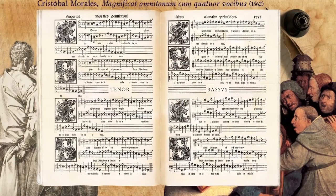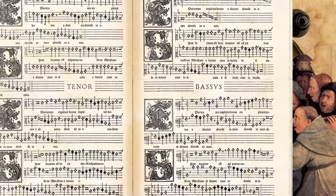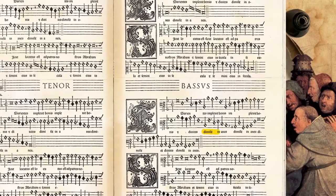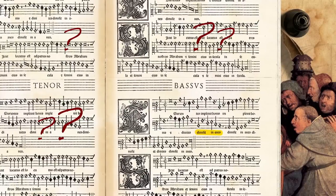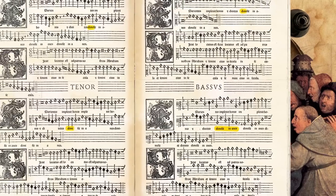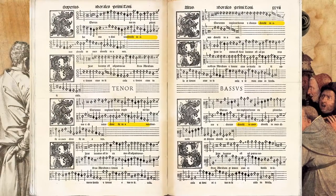For example, if I'm looking at the bass part and I want to know what happens in the other voices when I sing the text Dimisit in Anes, I have no immediate way to find that out. Looking at the places with the same text in the other voices will surely not be the answer, as in many styles the voices rarely sing the text together.